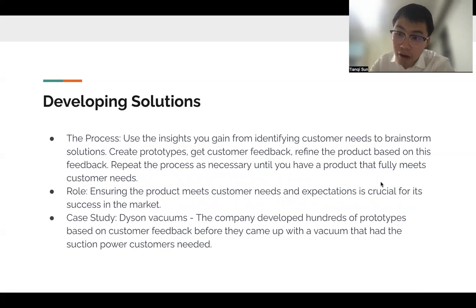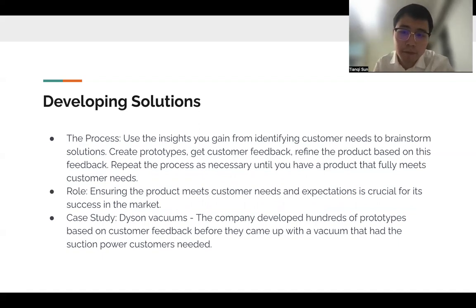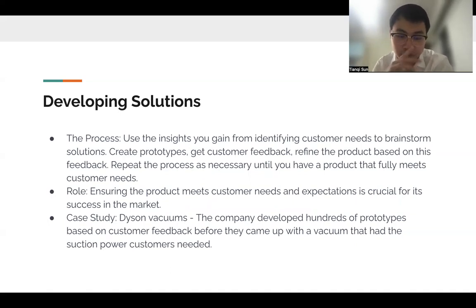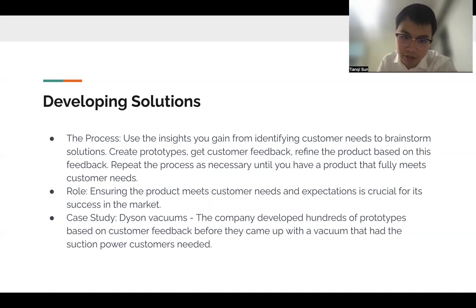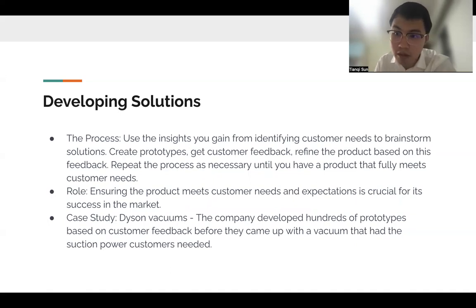After you identify a problem, you've got to develop the solution. The process involves using the insights you gained from identifying customer needs to generate solutions, creating prototypes, and getting feedback. You then refine the product based on that feedback and repeat this process until you have a product that fulfills every dimension of the customer need. A great example is the Dyson vacuum, where the company developed hundreds of prototypes based on customer feedback and came up with a vacuum that had the exact suction power customers needed.